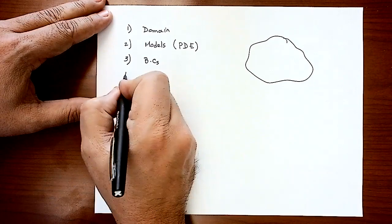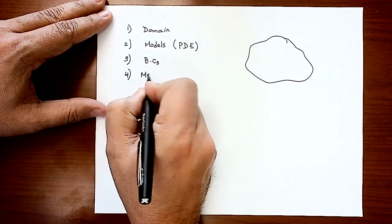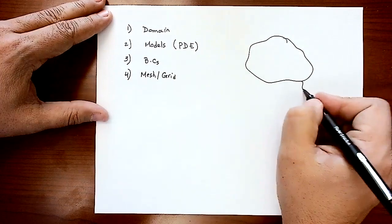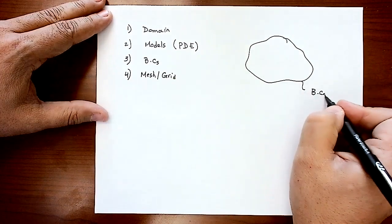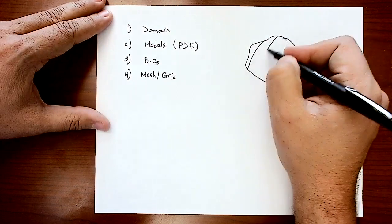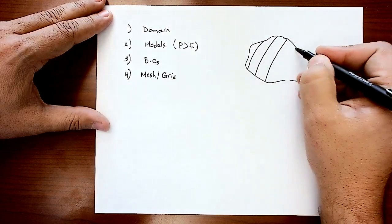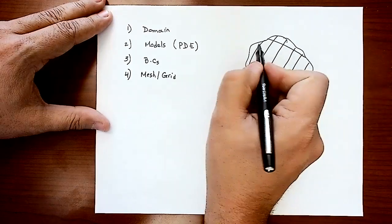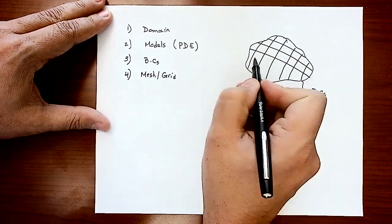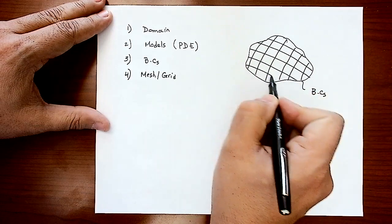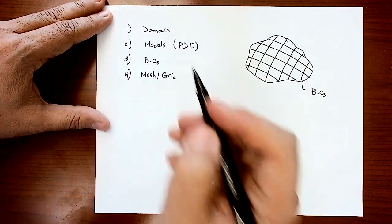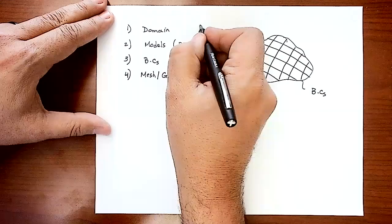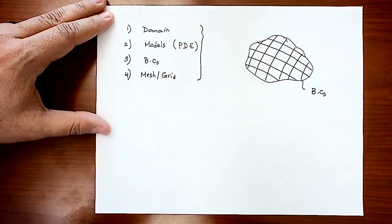Maybe step four should come before three: your mesh or grid. So far, I have the boundary conditions known, I've discretized my domain into subdomains, ending up with what we call the nodes. And I know what my governing equation is for that system. These are the steps we covered before.